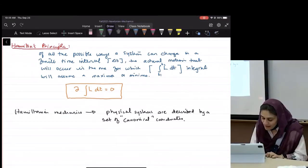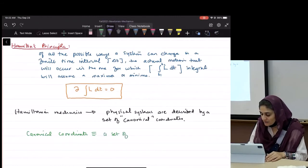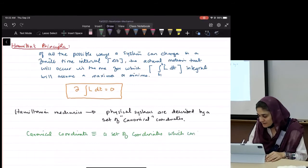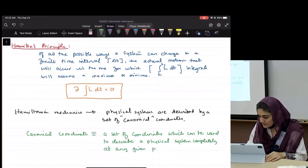Think whenever you hear that word, it's not complicated. The word seems complicated, but when you fundamentally understand what they mean, they don't remain complicated anymore. Okay, so now let's write the formal definition of it. Ready? Here we go. How do I define a canonical coordinate? A set of coordinates which can be used to describe a physical system completely at any given point in time.